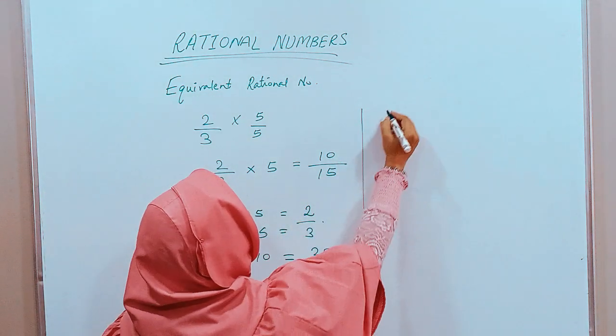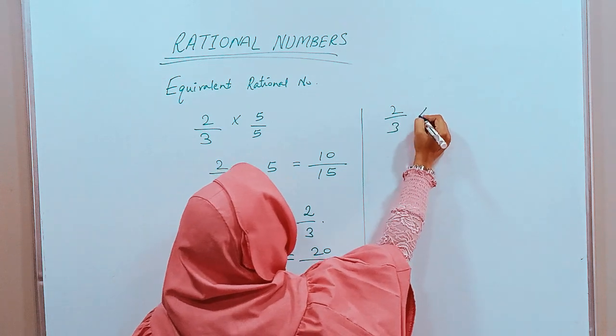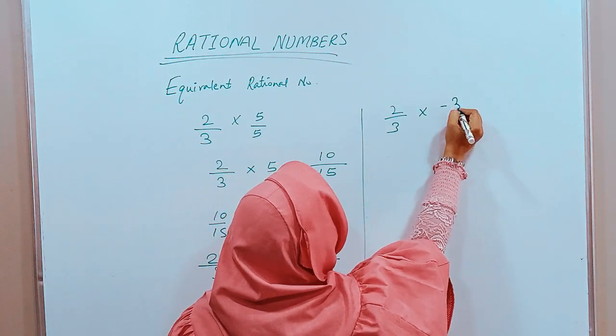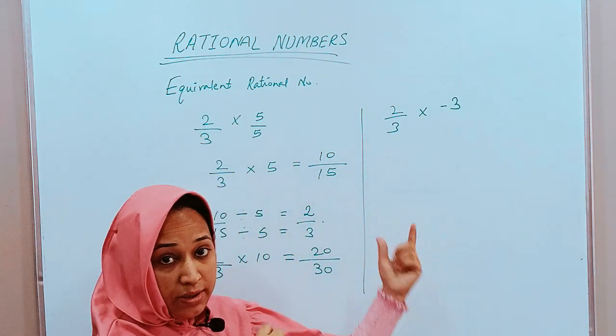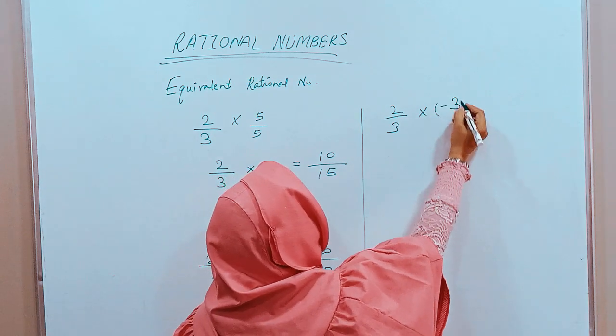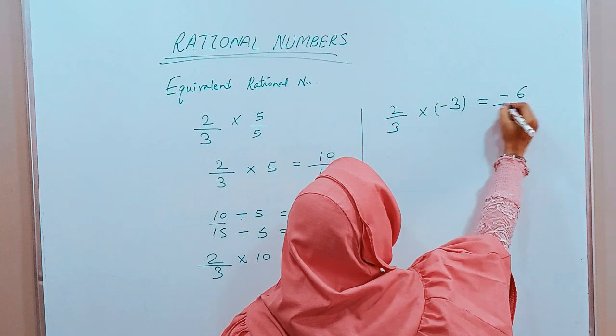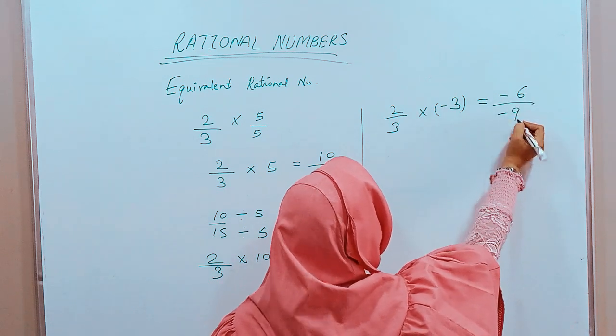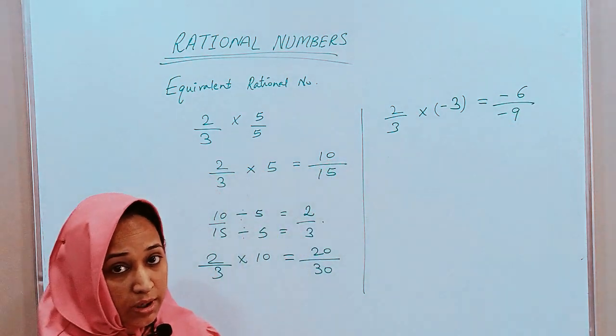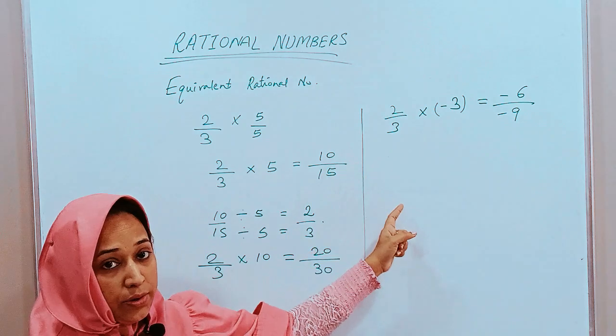Let us multiply 2 upon 3 with minus 3. Now, minus 3 is a negative integer. So 2 into minus 3 is minus 6 and 3 into minus 3 is minus 9. Minus 6 upon minus 9 is also equivalent to 2 upon 3.